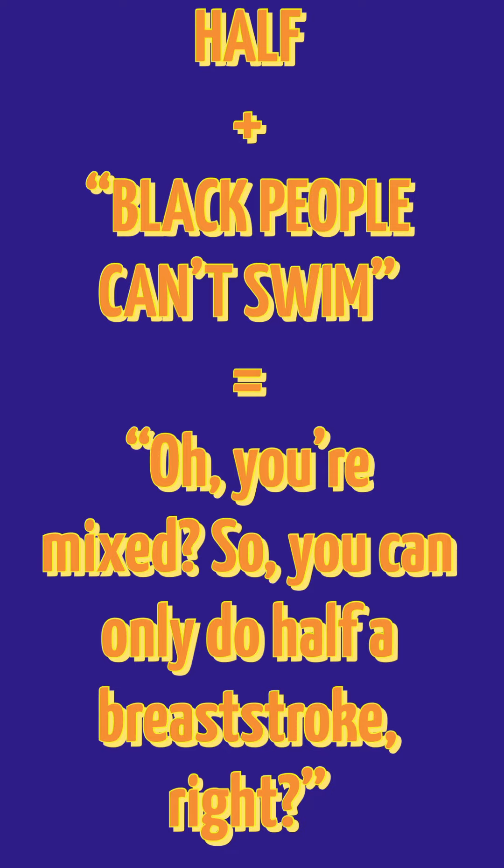So you can see here I have our equation laid out: half (H and F in some circumstances) plus a stereotype — in this circumstance, 'black people can't swim' — equals, in a real-world setting: 'Oh, you're mixed, so you can only do half a breaststroke, right?'